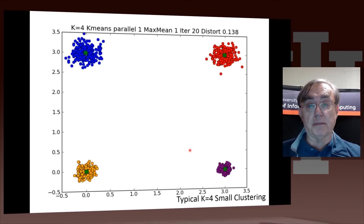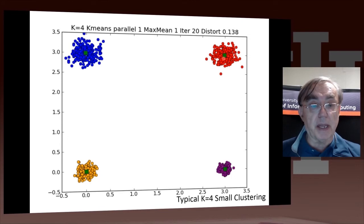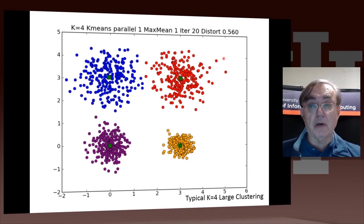Here's another example of four clusters with the small clustering, so very compact clusters. All of these things have 20 iterations. Clearly it finds what you would hope it would find, that each of those individual compact clusters, which I made as separate clusters, has turned out to be separate.